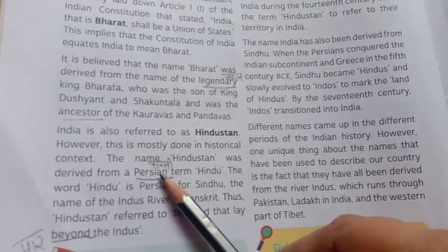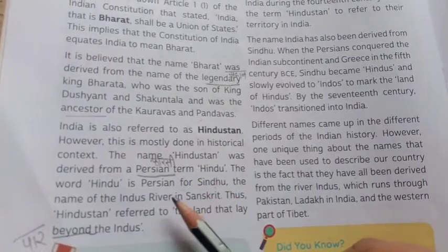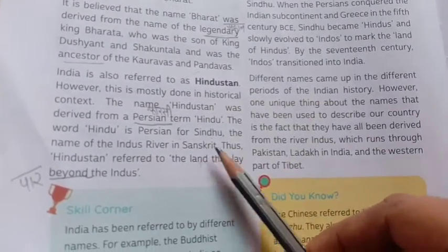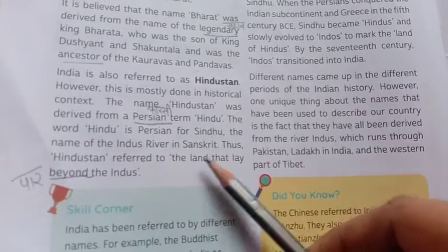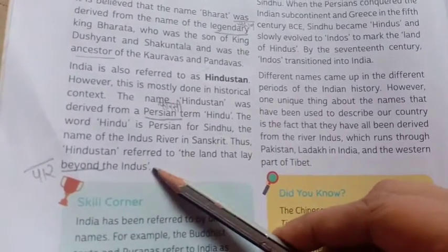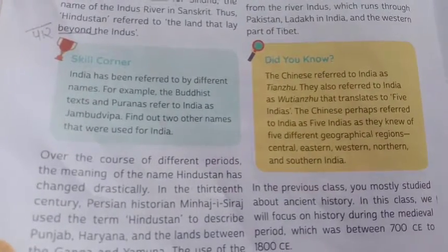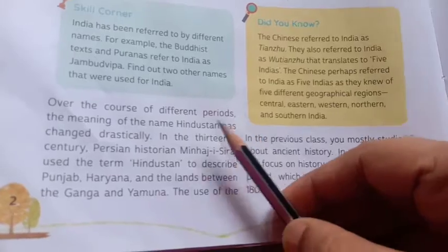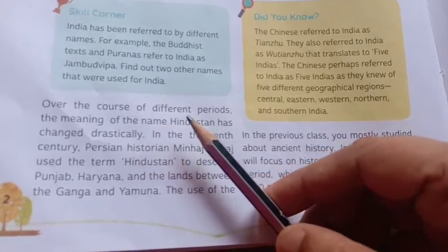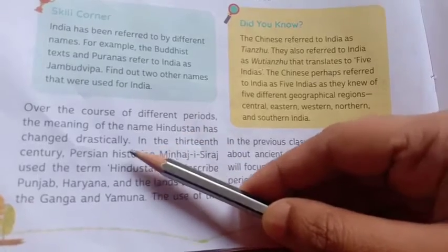The name Hindustan was derived from the Persian term Hindu. The word Hindu is Persian for Sindhu, the name of the Indus river in Sanskrit. Thus, Hindustan refers to the land that lay beyond the Indus. Over the course of different periods, the meaning of the name Hindustan has changed drastically.